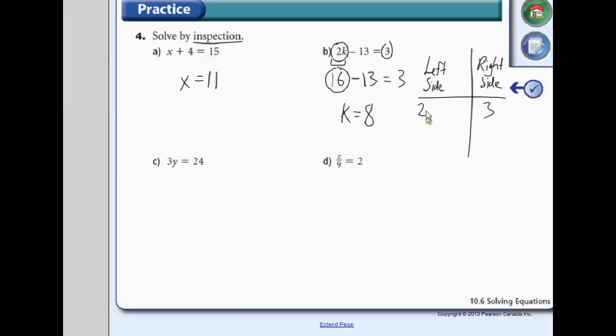On the left side, we have 2k minus 13. Then I'm going to substitute k for 8. So I'm going to write 2 times 8 minus 13, which is equal to 16 minus 13, which is equal to 3. As long as my left side and my right side match up, my original answer is correct.